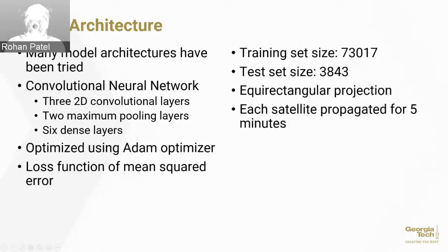We tried a whole bunch of different model architectures and eventually settled on the convolutional neural network. We had three 2D convoluting layers and two maximum pooling layers and six dense layers. We optimized using Adam's optimizer with the loss function of mean squared error, which is a very common set of parameters in machine learning. We had a medium-sized test set, about 73,000 images for training, and then a test set of about 3,800. In this case, we used equirectangular projection, which may surprise you because it is the projection with more distortion, but so far the model has actually performed better with it. Each satellite was propagated for about five minutes.